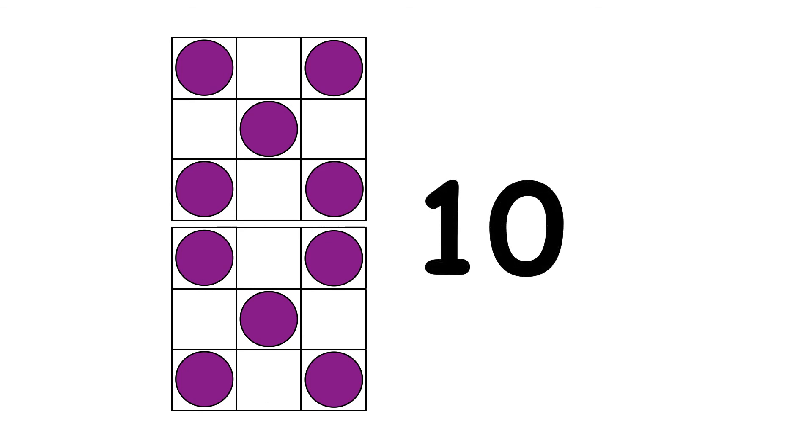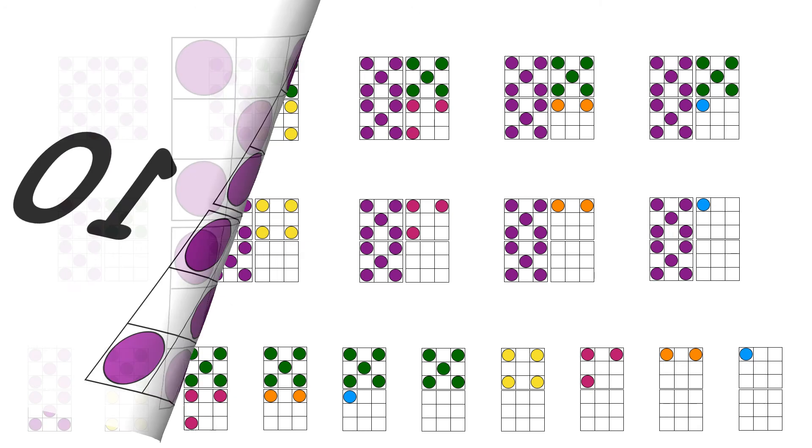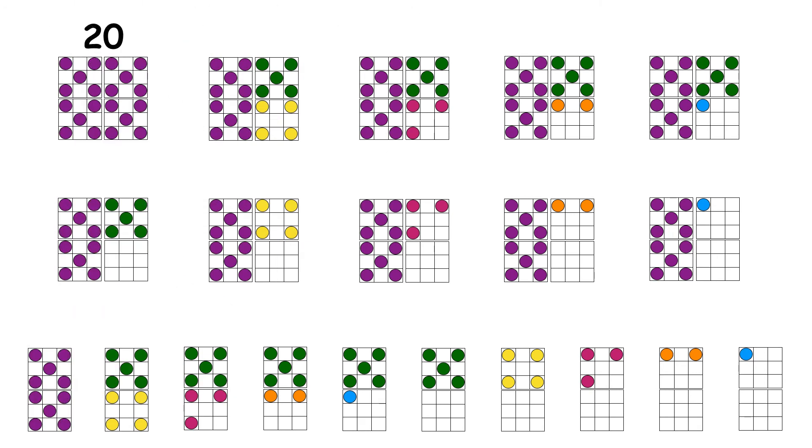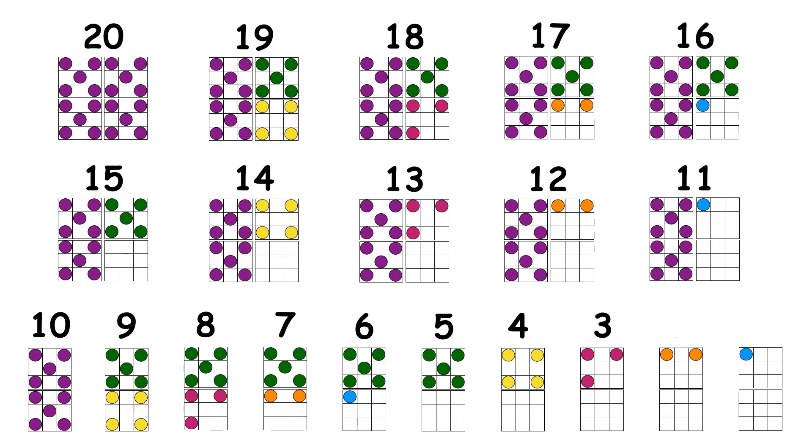Now let's finish by putting all the numbers back in order. 20, 19, 18, 17, 16, 15, 14, 13, 12, 11, 10, 9, 8, 7, 6, 5, 4, 3, 2, 1.